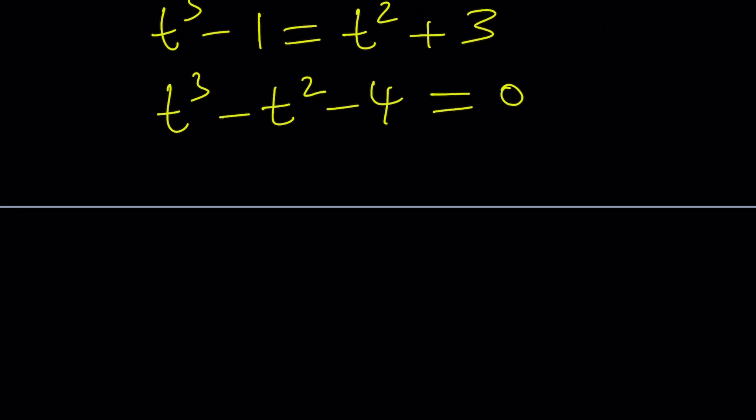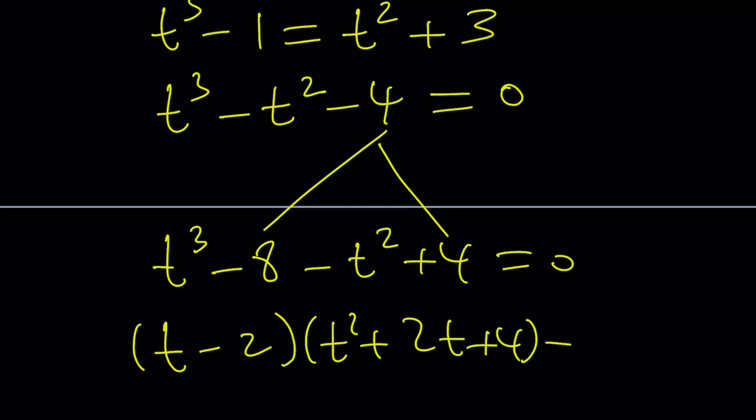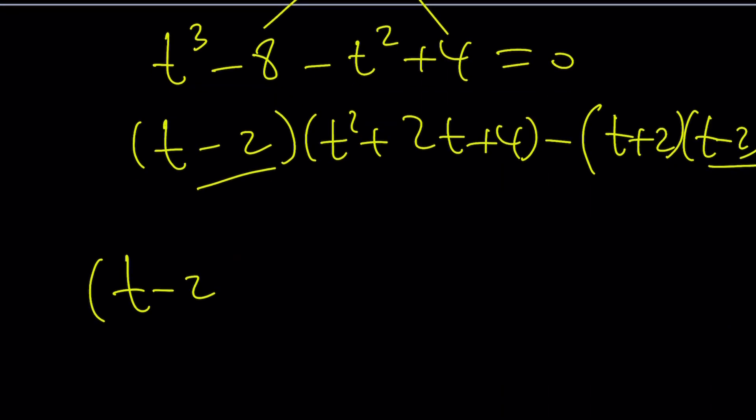Again, you can use the rational root theorem, Cardano's method, Ferrari's method, or some other method. But there's an easy way to do this because you can factor this expression, like t cubed minus 8 minus t squared plus 4. You can break down the negative 4 into this. This is factorable by difference of two cubes, and this is factorable by difference of two squares.